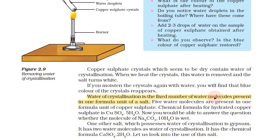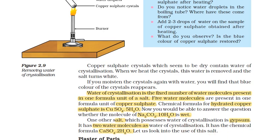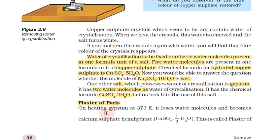A fixed number of water molecules is present in one formula unit of salts. Five water molecules are present in copper sulfate — that is hydrated copper sulfate, CuSO4·5H2O. Washing soda is Na2CO3·10H2O. Gypsum has two water molecules — CaSO4·2H2O — this is water of crystallization.